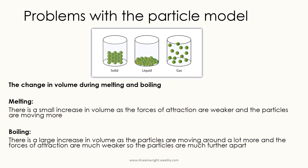The next problem with the particle model is the change in volume during melting and boiling. When you go from a solid to a liquid, you put energy in and it melts. You've got the same number of particles in the liquid as in the solid, but in the liquid the particles are moving past each other rather than in a regular arrangement, so there are small gaps between them. Because of these gaps, the liquid takes up a bigger volume than the solid, as the forces of attraction are weaker and the particles are slightly further apart.